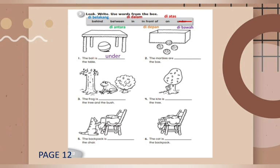Number two: the marbles are blank the box. Take a look at the picture — where are the marbles? The marbles are in front of the box. Kelereng itu berada di depan kotak itu. Number three: the frog is blank the tree and the bush. Where is the frog? The frog is between the tree and the bush. Katak tersebut berada di antara pohon dan semak-semak.